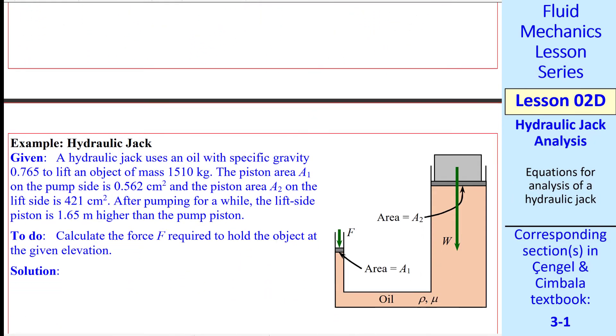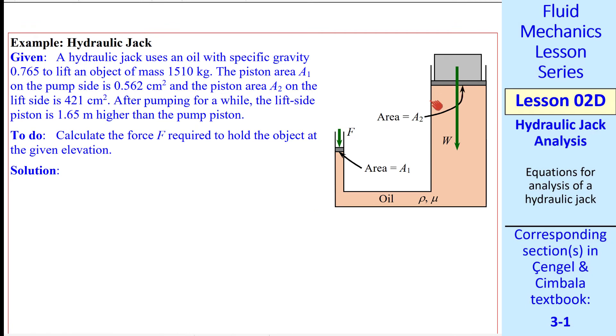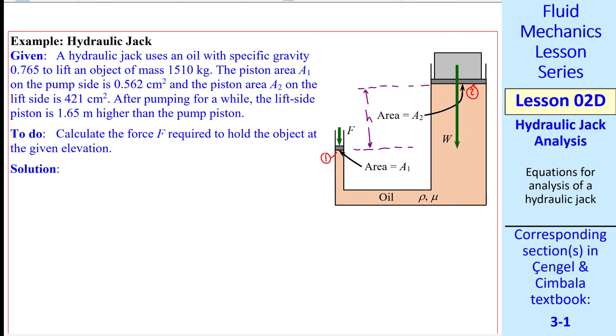Let's do an example. In this case, we're allowing for the pistons to be at different elevations. A hydraulic jack uses an oil with some specific gravity to lift an object of a given mass. Piston areas A1 and A2 are given, and this elevation between the two pistons is 1.65 meters. I'll call that elevation difference H. By the way, it's always wise to work in variables as far as possible before plugging in any numbers.